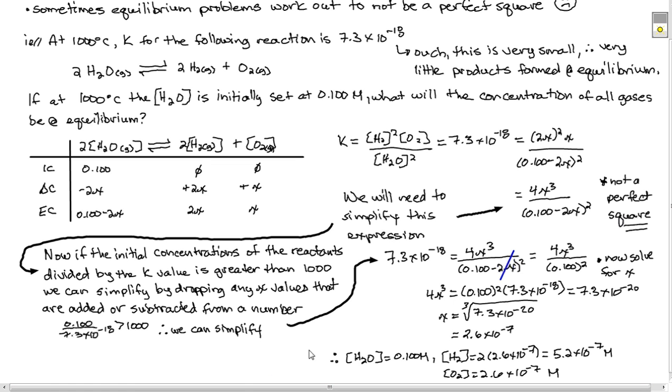And there you go. So our concentration of water is really not going to change. It's going to change by such a small amount that we're not even going to worry about that. Again, 2.6 times 10 to the minus 7 is 0.000026 moles per liter, which is much smaller than that. But we can figure out what the concentrations of hydrogen gas would be and what oxygen gas would be. And so this is an example where we get an imperfect square, but K is really small.